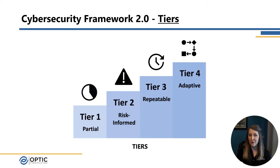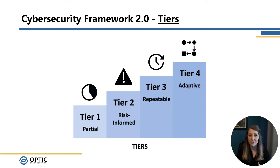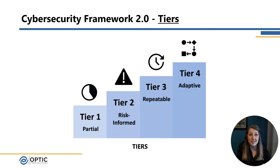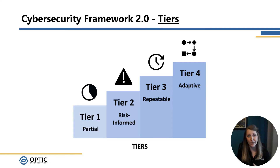Then we can move up to tier three, repeatable, where we have more of an organization-wide approach implemented consistently to make sure that everybody's meeting expectations and that senior leadership is in the know when it comes to cybersecurity. Many organizations choose to stop here — you don't actually have to go all the way up to tier four. But tier four, adaptive, can be expensive, though it is also necessary in some cases. This tier is characterized by meeting the objectives already discussed, as well as looking to the future and optimizing your capabilities to make sure that you're prepared for what's coming before it hits you.